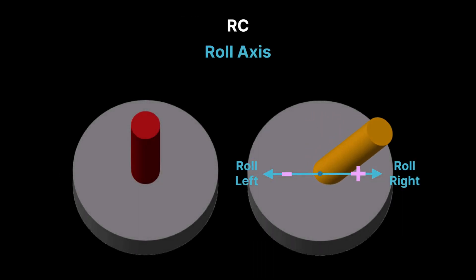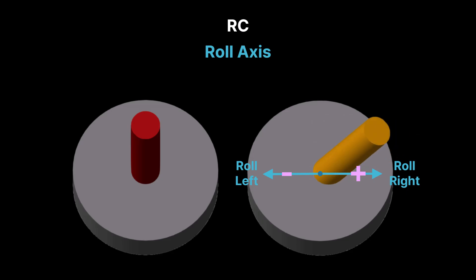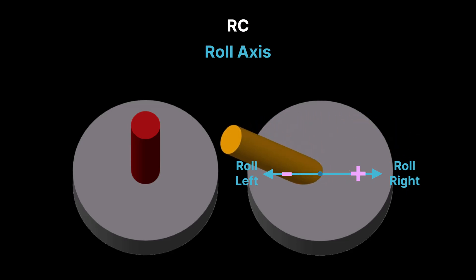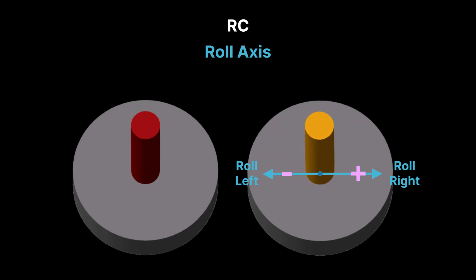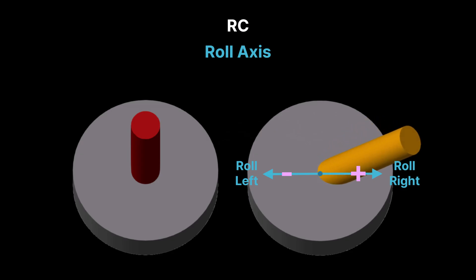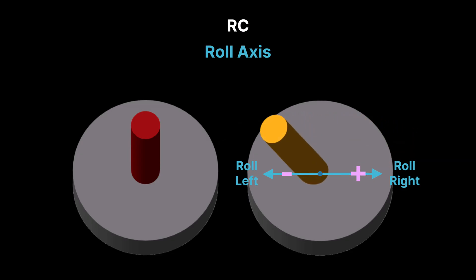Before we proceed, let's take a brief look at how the remote controller RC works. An RC allows the operator to control the vehicle's movement, including velocities, throttle, roll, pitch, and yaw.